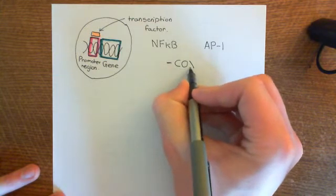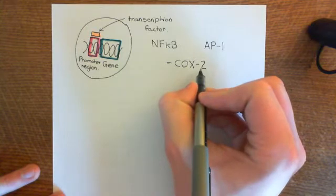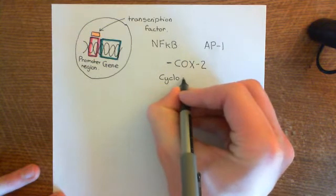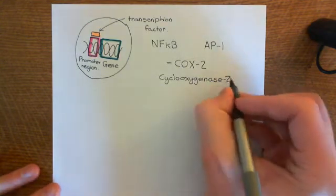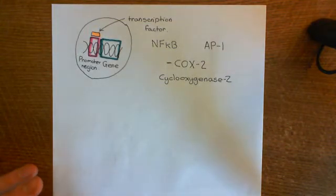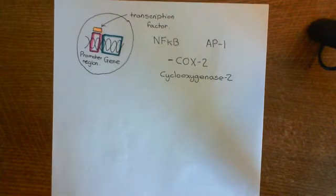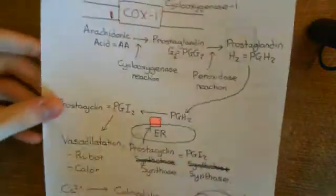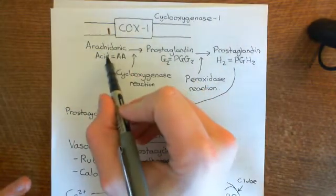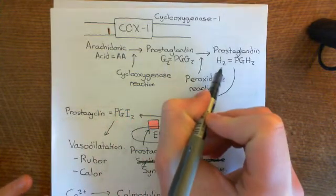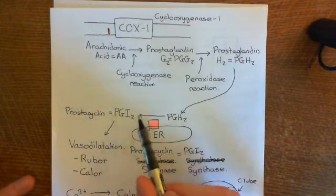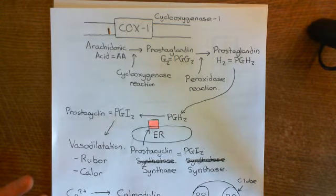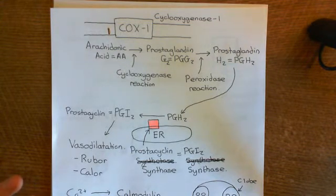One of the proteins hugely upregulated in these endothelial cells is COX-2, which stands for cyclooxygenase-2. This should ring bells because we've already seen cyclooxygenase-1, which converts arachidonic acid to prostaglandin G2 and then prostaglandin H2. Prostaglandin H2 can be acted upon by prostacyclin synthase to make prostacyclin, which is released from the endothelial cell and causes vasodilation, increasing blood flow to the affected site.